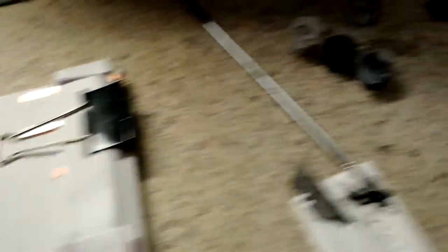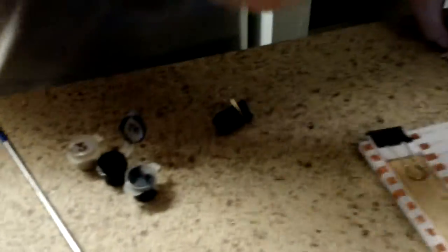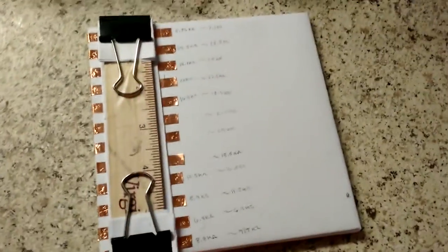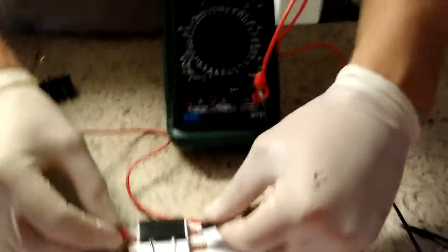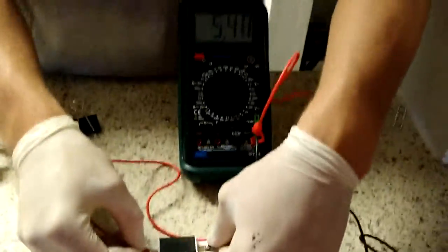Now after letting that dry for one and a half to two days you can then begin to measure. Here are about twelve traces that we have already made with the ruler adding the pressure and here's the ohmmeter that we'll be using to make our measurements.